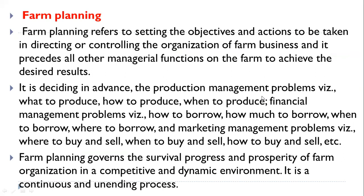Farm planning is deciding in advance the production management problems — namely what to produce, how to produce, when to produce — financial management problems like how to borrow, how much to borrow, when to borrow, where to borrow — and marketing management problems, namely where to buy and sell, when to buy and sell, and how to buy and sell. These are the different management problems we decide in advance in farm planning.